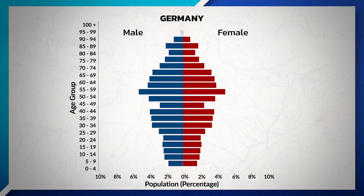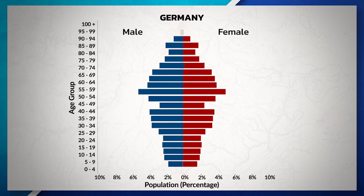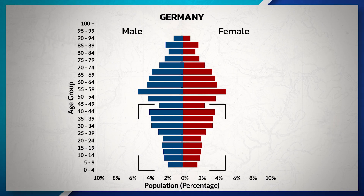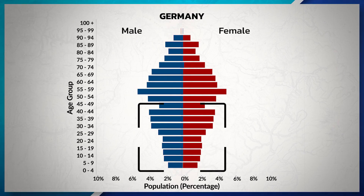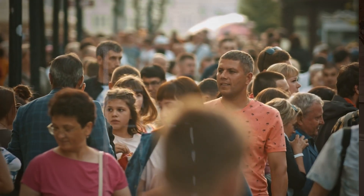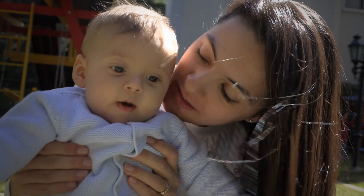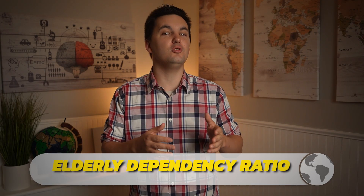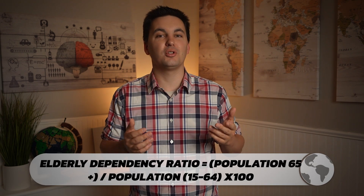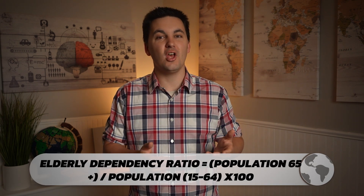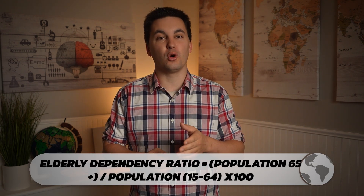In Germany, we can see the majority of the population is in their post-reproductive years, with the number of people being smaller at each younger interval, indicating that Germany is most likely in Stage 5 of the demographic transition model, as the population will most likely decline as fewer people have children. If this trend continues, Germany will likely see their elderly dependency ratio continue to increase, as more of their population retires, putting more of a burden on the workforce.